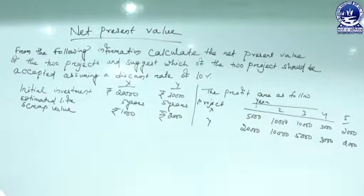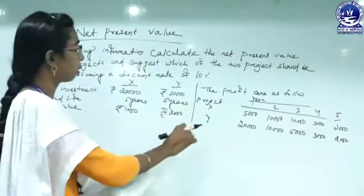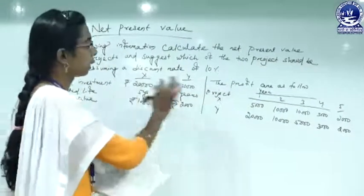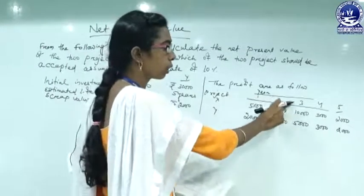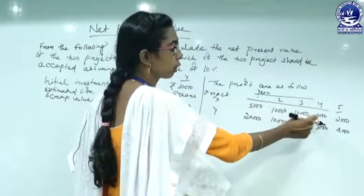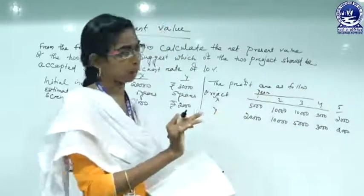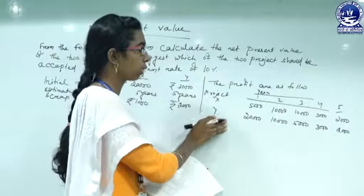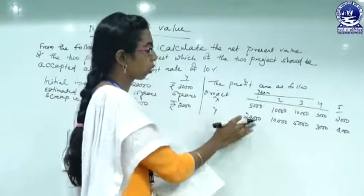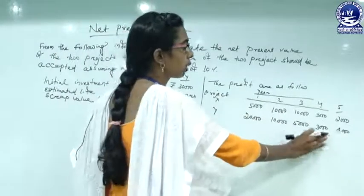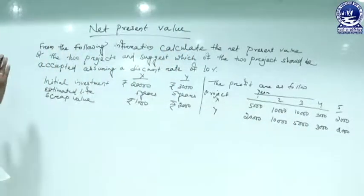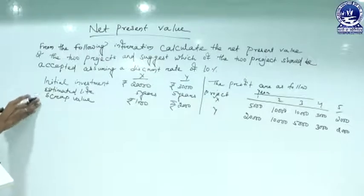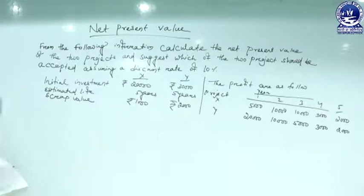The profit from Project X is ₹5,000 in year one, ₹10,000 in year two, ₹10,000 in year three, ₹3,000 in year four, and ₹2,000 in year five. For Project Y, the cash inflows are ₹20,000, ₹10,000, ₹5,000, ₹3,000, and ₹2,000 over the respective five years. We need to determine which project to choose, so let's solve this problem.